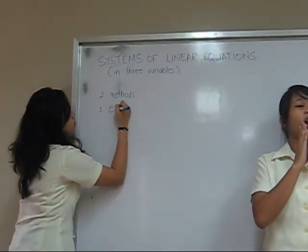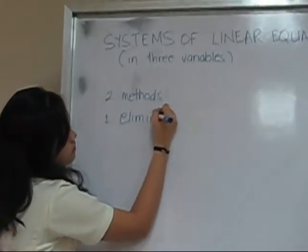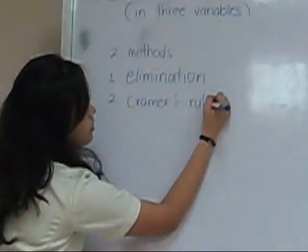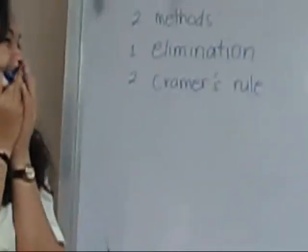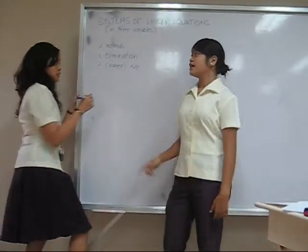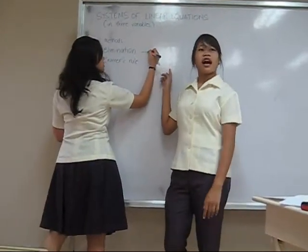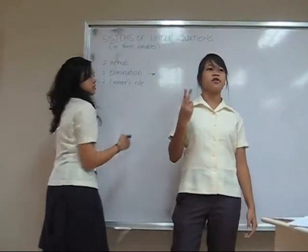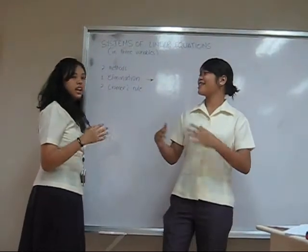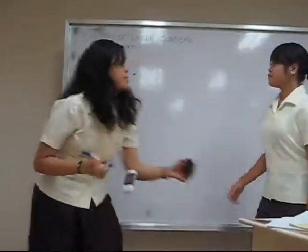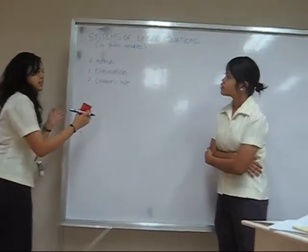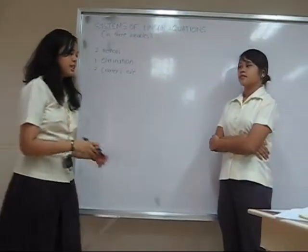You guys better listen because it's really hard. We would need 100% attention for better comprehension. Elimination is just kind of like elimination in two variables, only you have to use elimination again and again and again — yes, repetitive. Cramer's rule uses the matrix method.